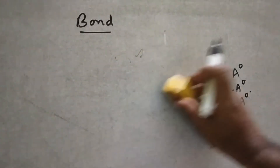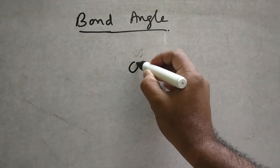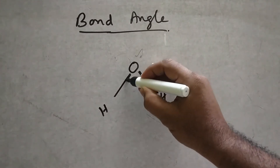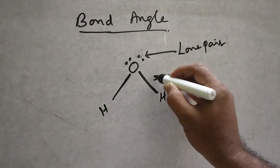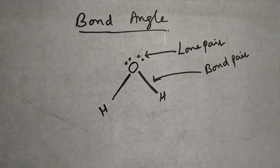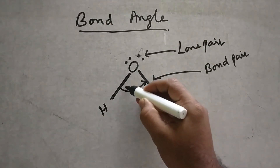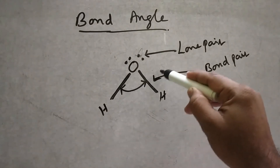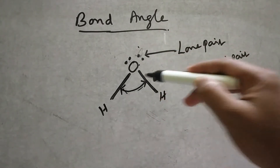Next, bond angle. Bond angle relates to the central atom, which has bond pairs. A bond pair is where a bond is formed. There is also a lone pair. Bond pair and lone pair repulsion occurs naturally. Lone pair and lone pair repulsion also occurs. So the angle between two bonds at the central atom is the bond angle.